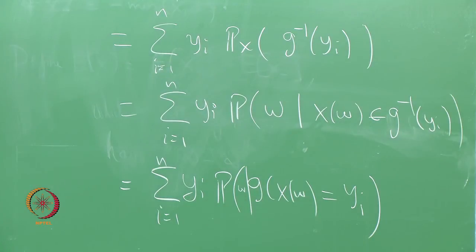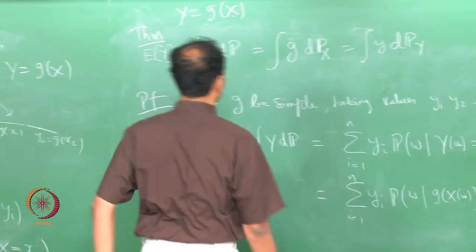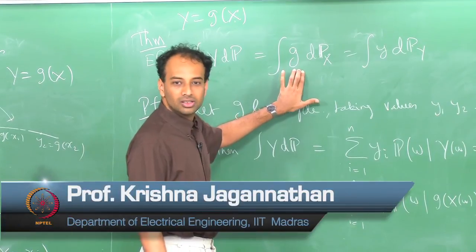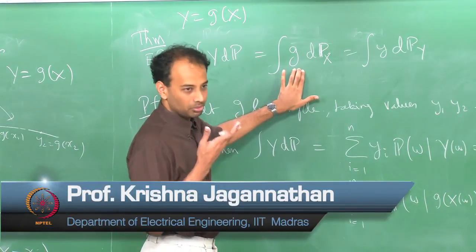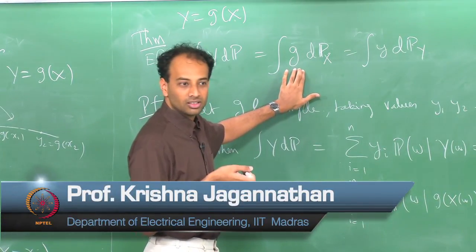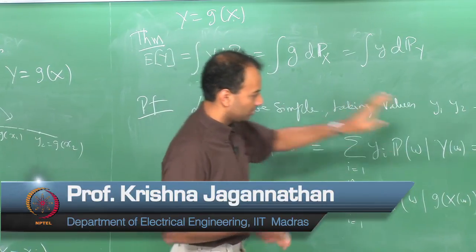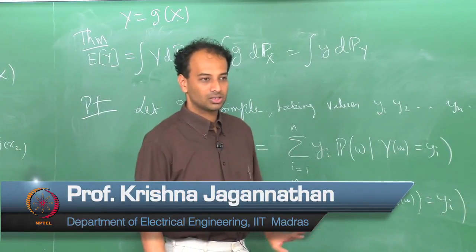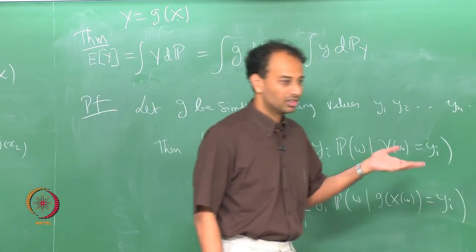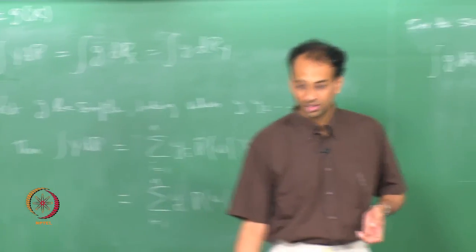For any non-negative function g, you approximate g using simple functions from below and then use monotone convergence to complete the proof. I am out of time, so we will resume next class with the more general case for non-simple functions. Thank you very much.